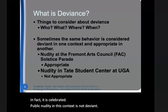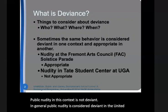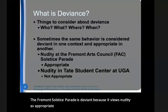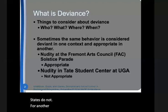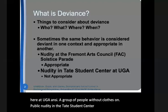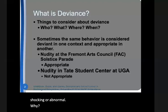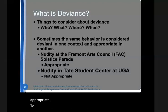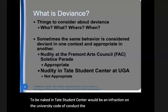In general, public nudity is considered deviant in the United States. The Fremont Solstice Parade is deviant because it views nudity as appropriate when most public gatherings in the United States do not. For another example, imagine you enter Tate Student Center here at UGA and see a group of people without clothes on. Public nudity in the Tate Student Center would seem a little shocking or abnormal. The university has guidelines regarding public nudity that specify that public displays of nudity on campus are not appropriate. To be naked in Tate Student Center would be an infraction on the university code of conduct, a deviation from the normal behavior outlined by the university.